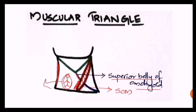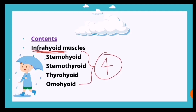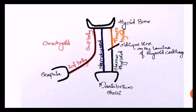The muscular triangle contains all the infrahyoid muscles - there are four infrahyoid muscles, which is why it is called the muscular triangle. These are the sternohyoid, sternothyroid, thyrohyoid, and omohyoid.